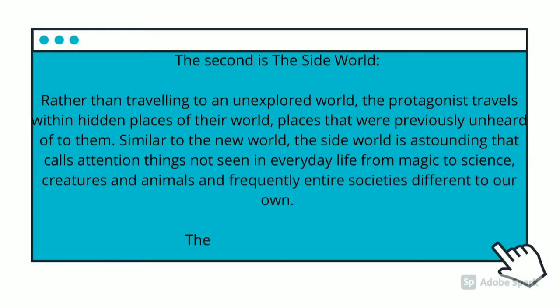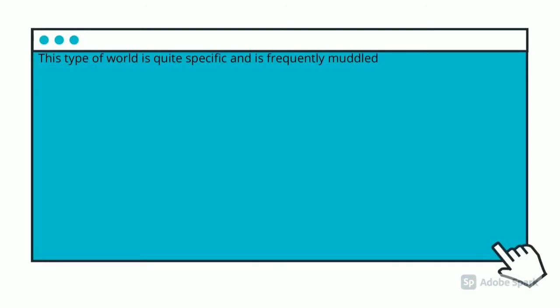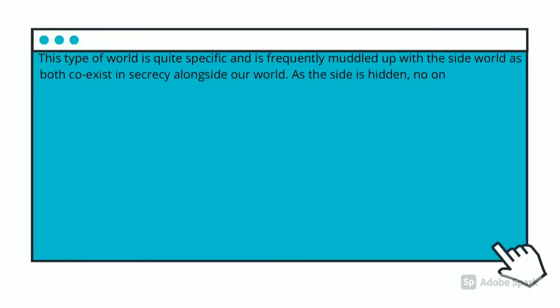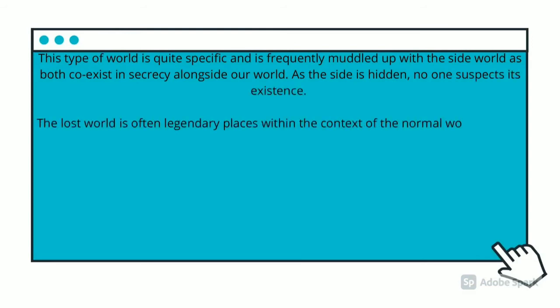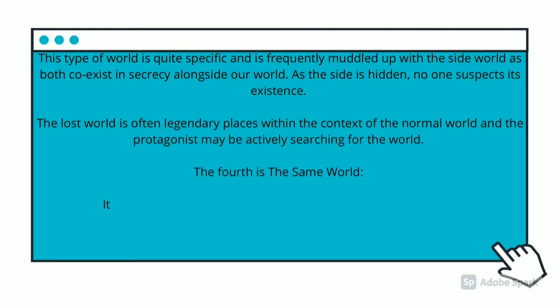The third type is the lost world. This type of world is quite specific and frequently exists in secrecy alongside our world, with society unaware of its existence. The lost world is often the hidden places within the confines of the normal world and the protagonist may be actively searching for it.